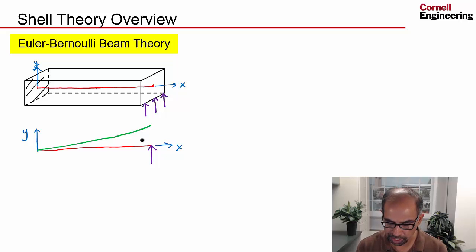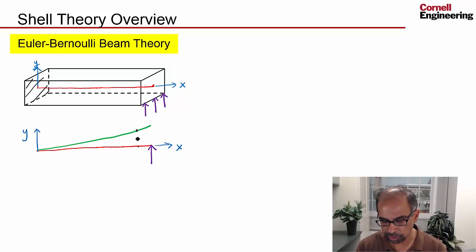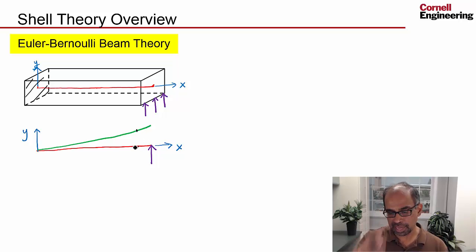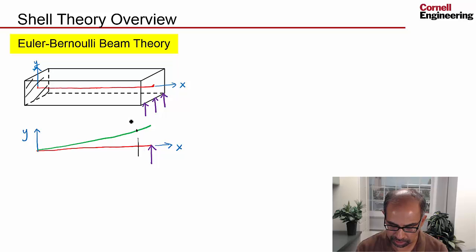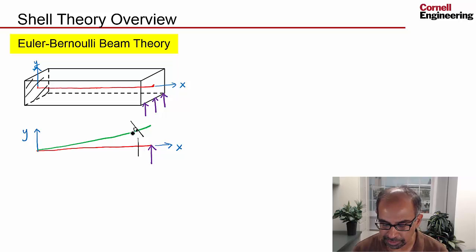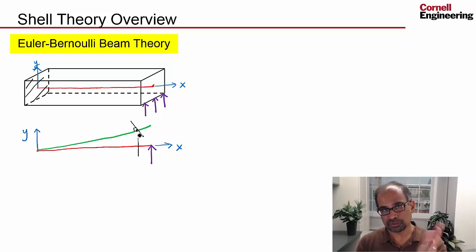I've exaggerated the deformation. If I have a point on the midline, it's going to move in the y direction — that's the transverse direction — to over here. I also assume that any cross section is going to rotate together as a whole. That's an assumption built into Euler-Bernoulli beam theory: plain sections remain plain.